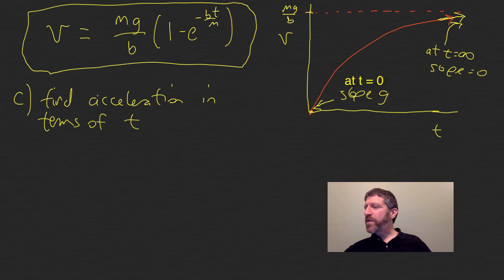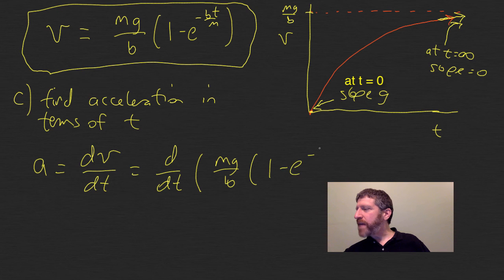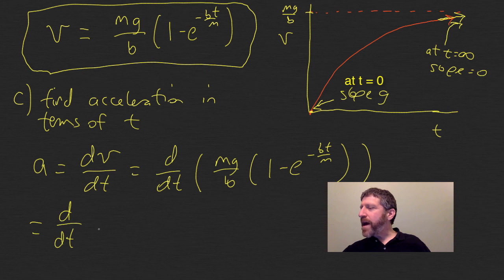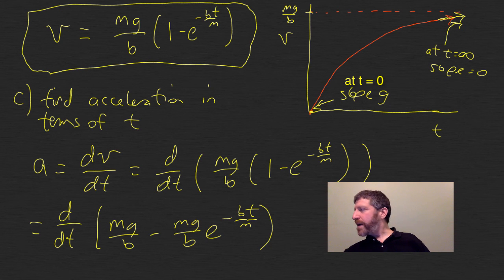All we need to do to find the acceleration is find the first derivative of the velocity. That is just d/dt of our expression: mg over b times the quantity 1 minus e to the negative bt over m. To do so, I'm going to multiply that out so we get mg over b minus mg over b times e to the negative bt over m, and that way it's easier to find the first derivative, because this first term is just going to be a constant.